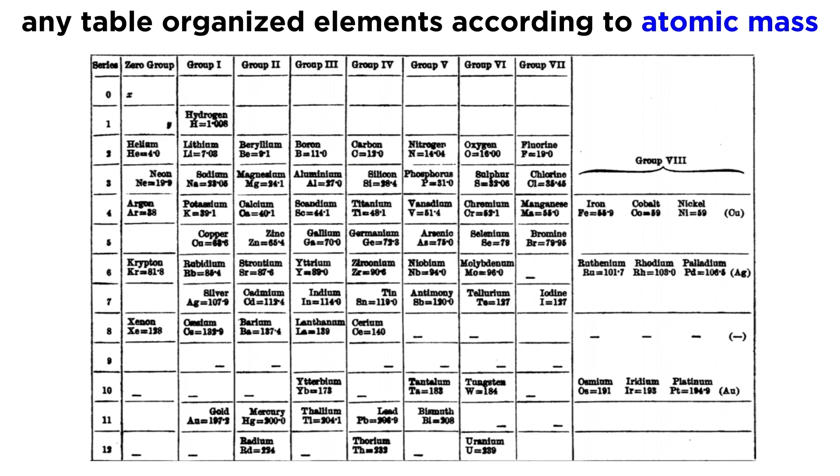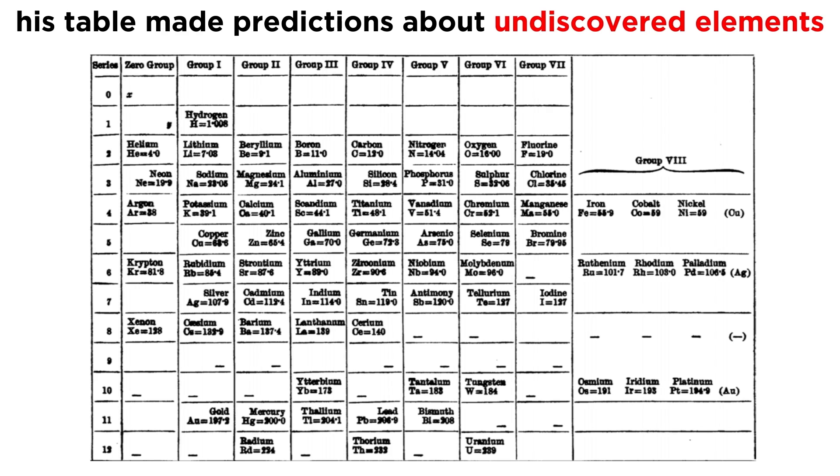Although other formats also organized the elements by increasing atomic mass in a way that highlighted the periodic relationship of some of these recorded properties, Mendeleev went one step further. Because there were empty spots in different locations, his table also made predictions about the existence of as-of-yet-undiscovered elements on the basis of the groups they would necessarily belong to.